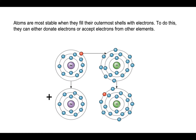Now, sodium no longer has the total electrons that a neutral sodium atom had. There are 10 electrons total, and in the nucleus, sodium has 11 protons — so there is one more positive charge.